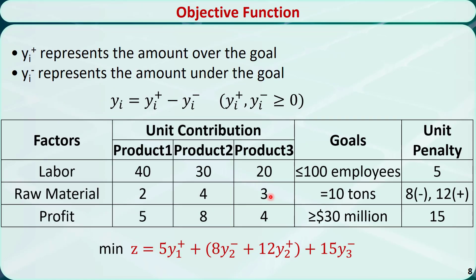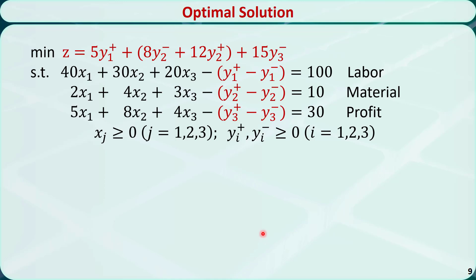The manager wants to minimize the total penalty. For labor, there will be a penalty only if the number of needed employees is over 100, so the penalty is 5 times Y1+. For raw material, there will be a penalty if it is less than 10 tons or greater than 10 tons, so the penalty is 8 times Y2- plus 12 times Y2+. For profit, there will be a penalty if it is less than 30 million dollars, so the penalty is 15 times Y3-. The total penalty is their sum.